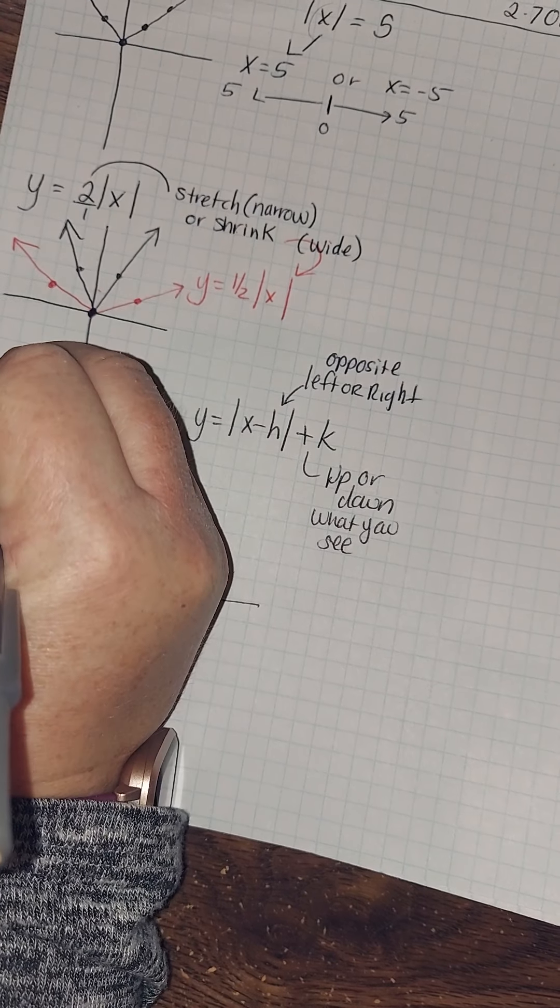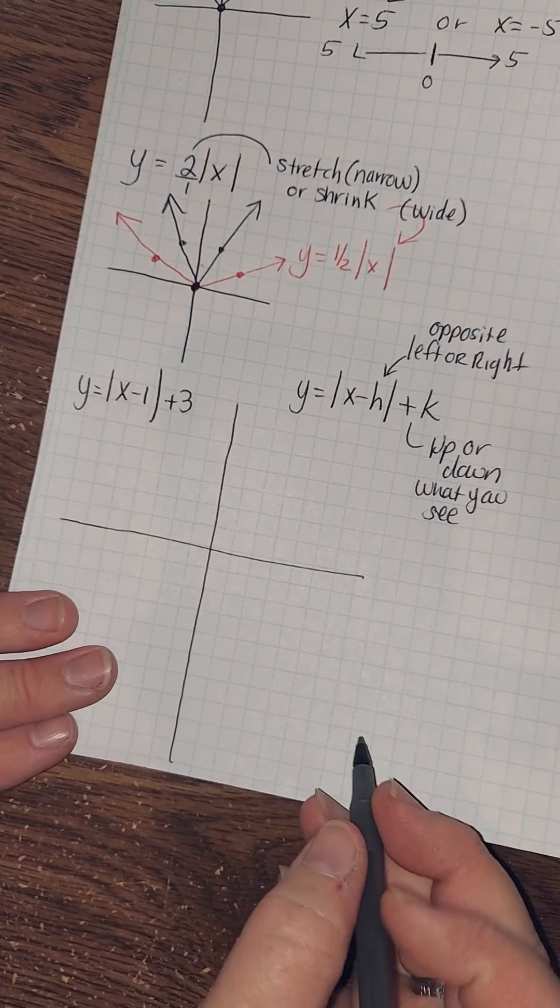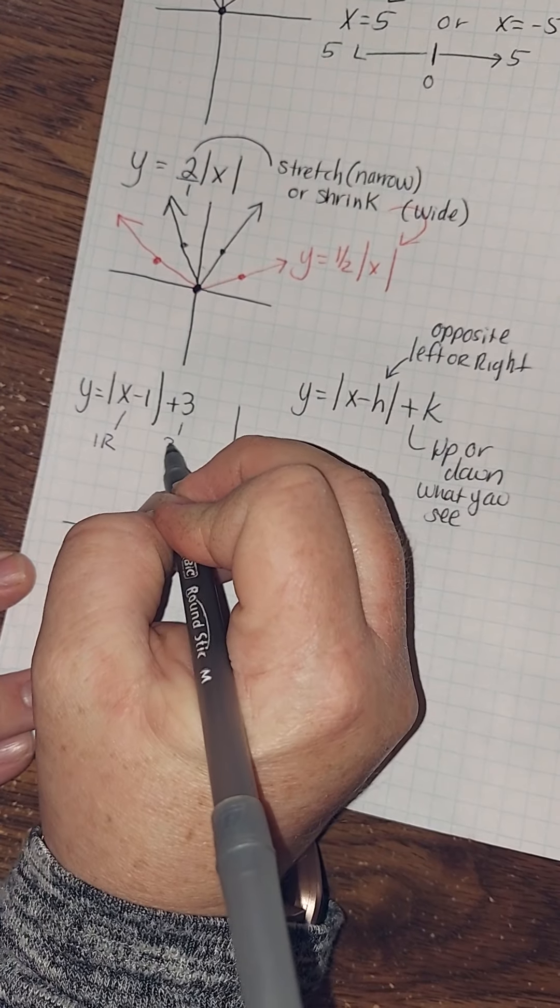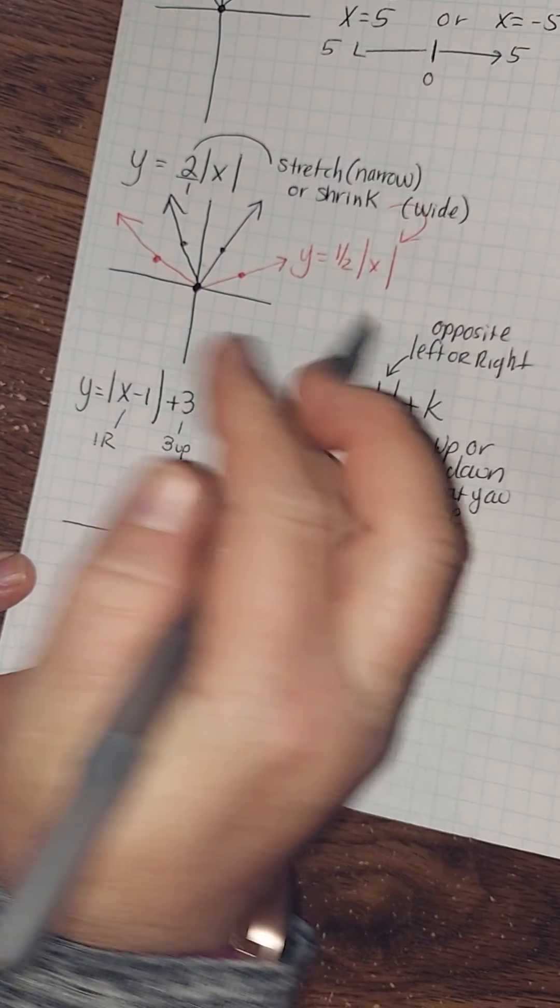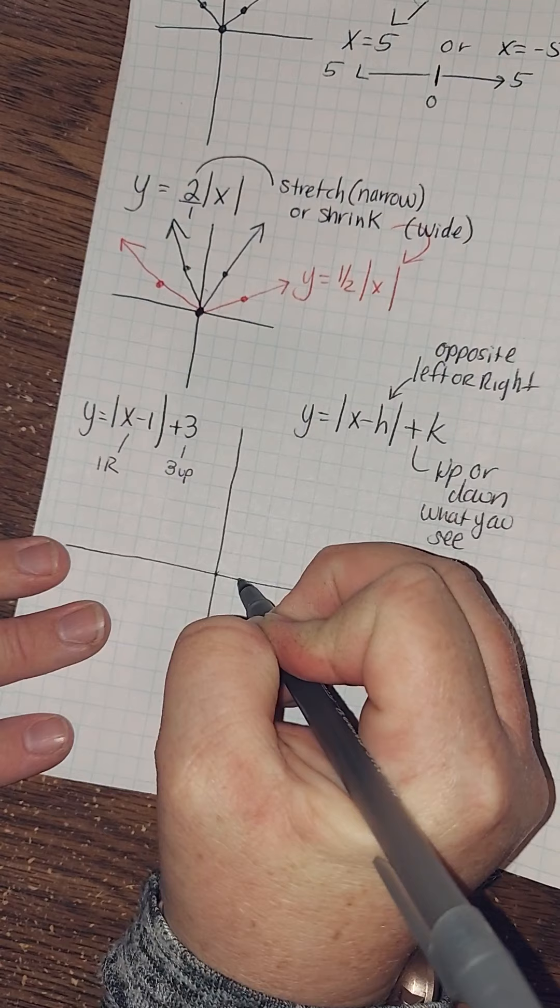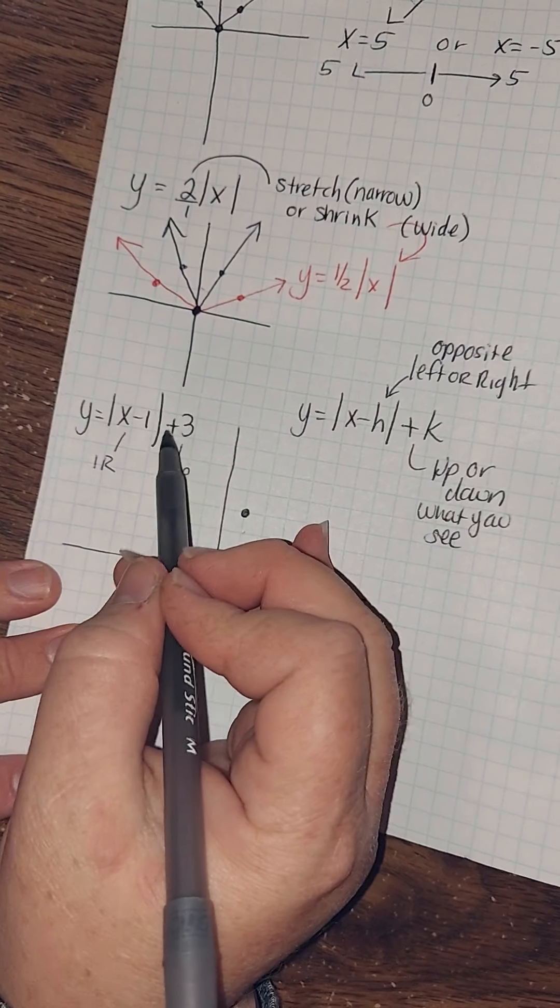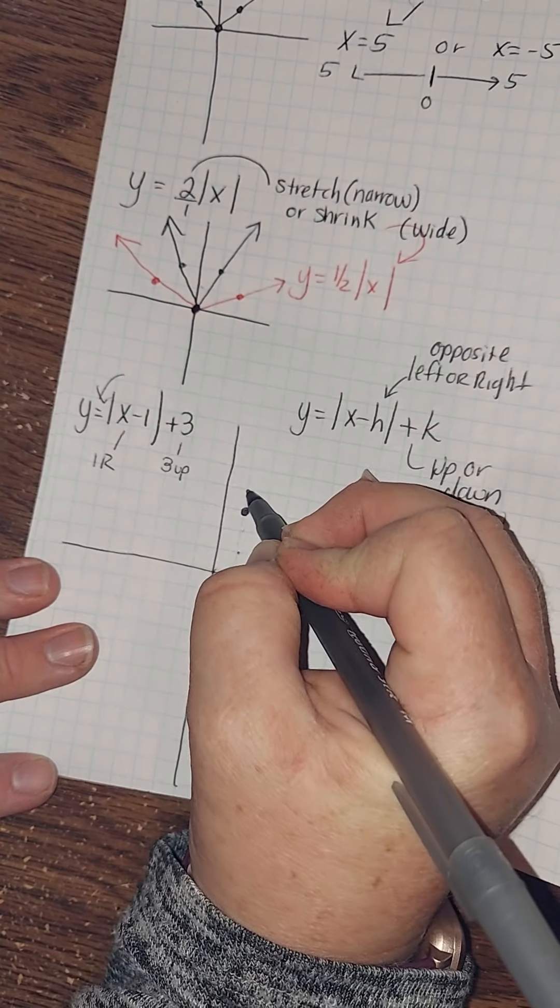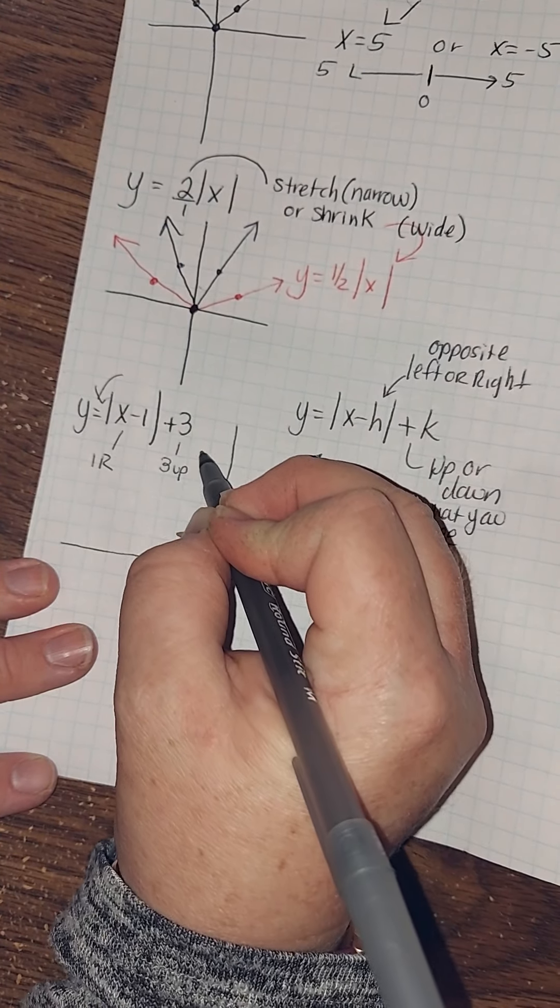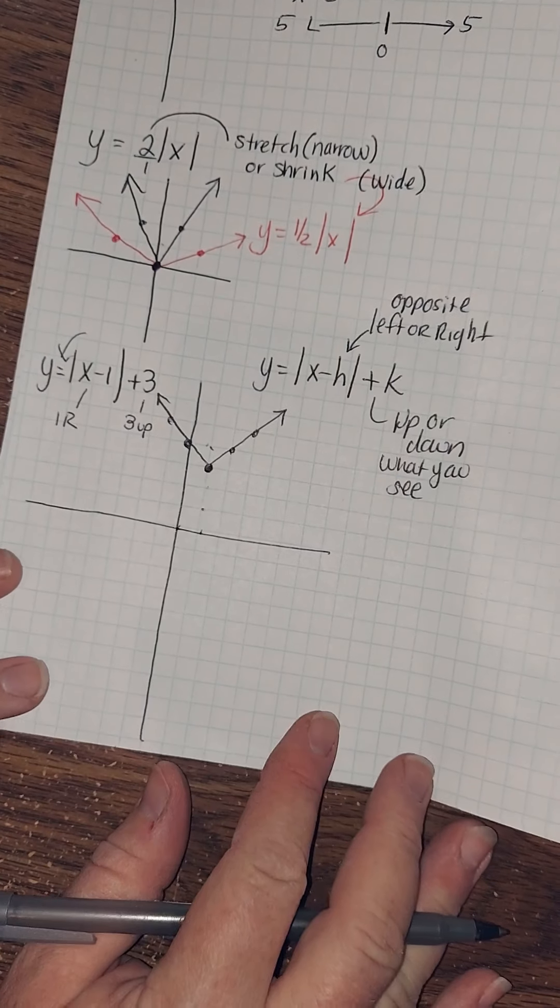So let's do a translation. Y is equal to x minus one plus three. Again, we're not plugging these into our calculator. We know we can do this. So what does this mean? Well, this is one to the right, and this is three up. So we were at zero, zero, right? If you think about up here, we were at zero, zero. Go one to the right and three up. One, two, three. Now, once you've done that, you've translated. Now, what's my slope? Well, my slope's one. Well, that's easy. Up one, over one, up one, over one. That's it. All you've done is moved it up and over. That's not so bad, is it?